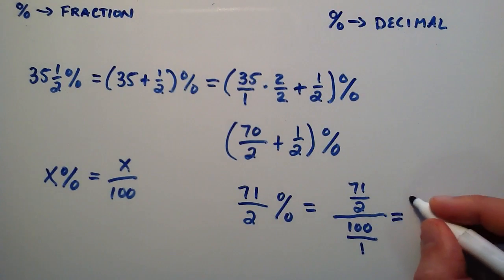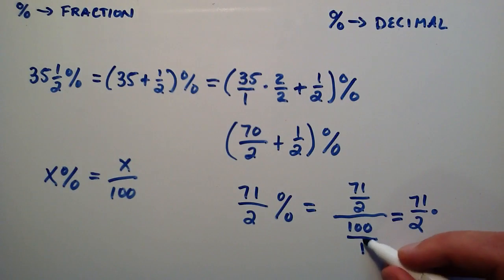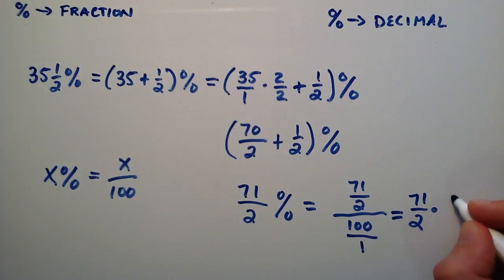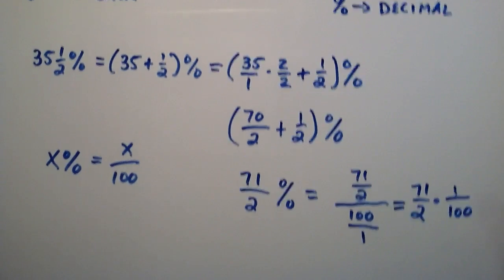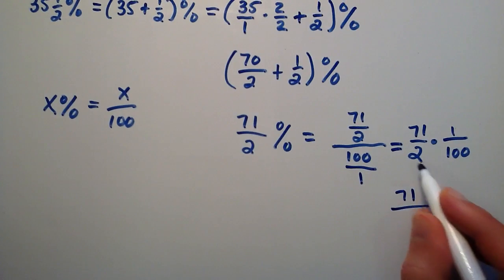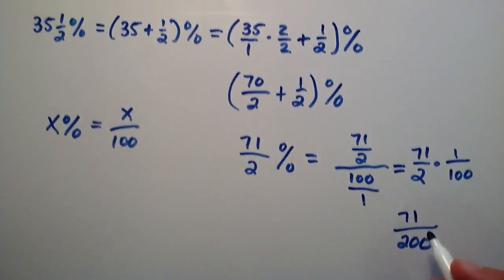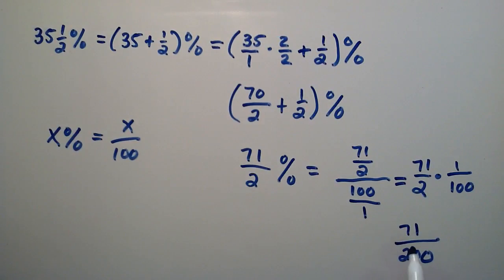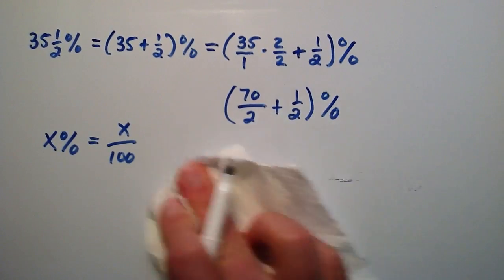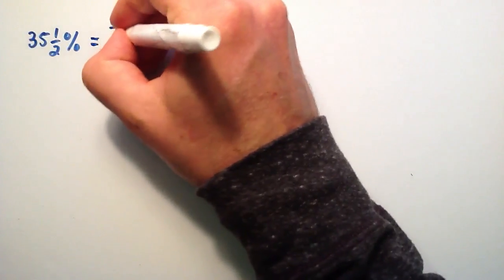So we rewrite the numerator here, 71 divided by 2. And instead of dividing it by 100 over 1, we multiply it by 1 over 100. So now we have 71 times 1 is equal to 71. And 2 times 100 is equal to 200. So we've converted 35 and 1 half percent into the fraction 71 over 200. So let me go ahead and just rewrite that. 35 and 1 half percent is equal to 71 over 200.